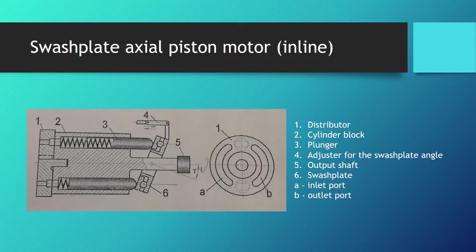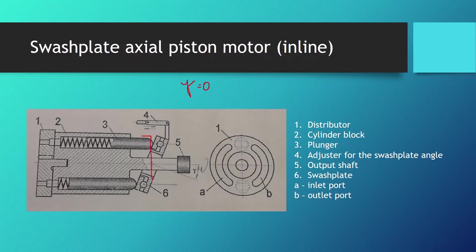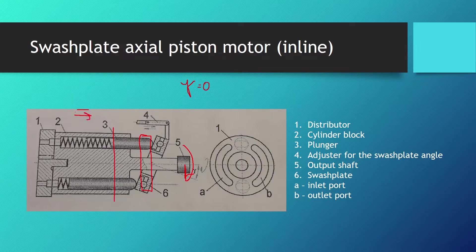When we have the gamma angle at zero, displacement is zero. Nothing moves. Imagine this swash plate standing like this and rotating around. Nothing is happening because the plungers are going to stay in the same place. They're not going to reciprocate so we're not going to have mechanical movement.